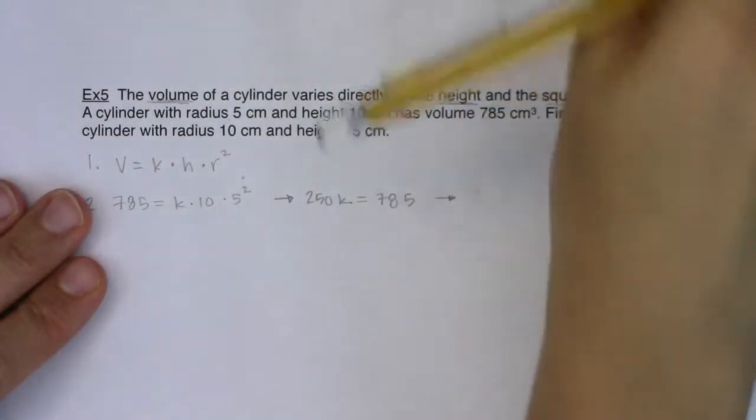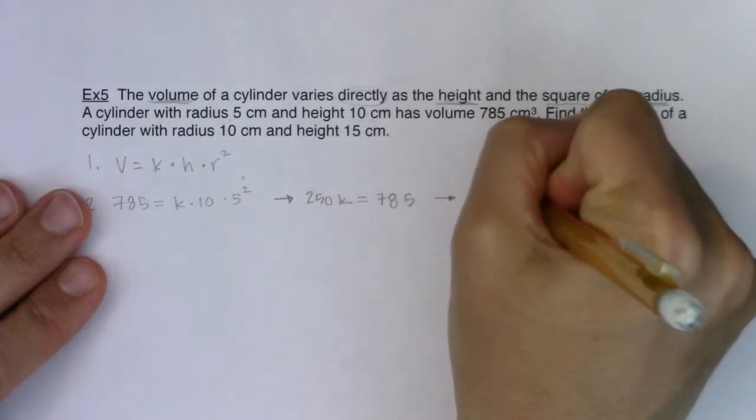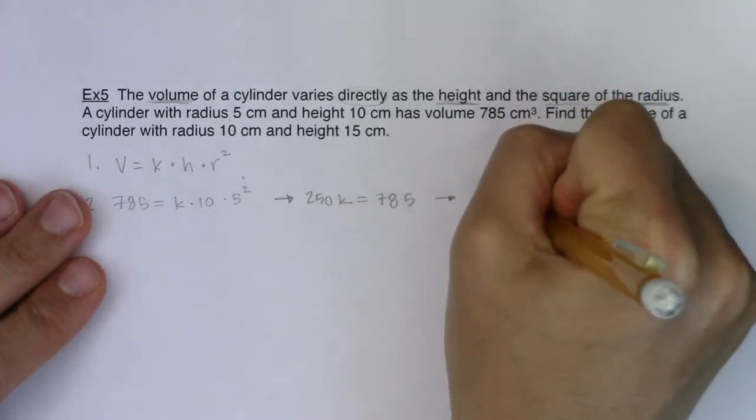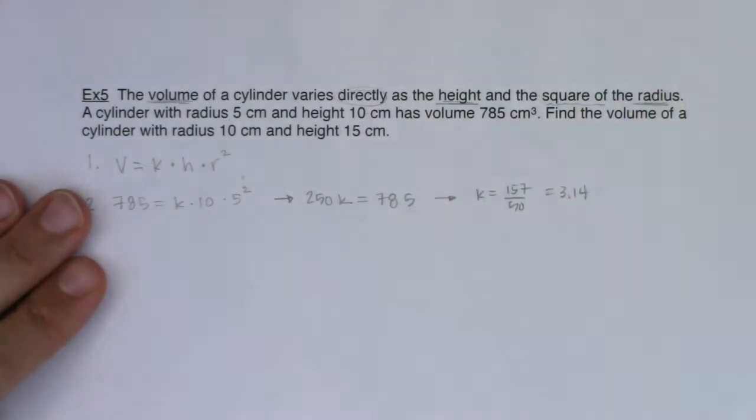If you want to use the decimal 3.14 and maybe that number is a little bit familiar to you, then go for it. But I'm going to use 157 over 50. Actually, I'll put both just so you have it for reference. So K, you could either write 157 over 50 or 3.14.